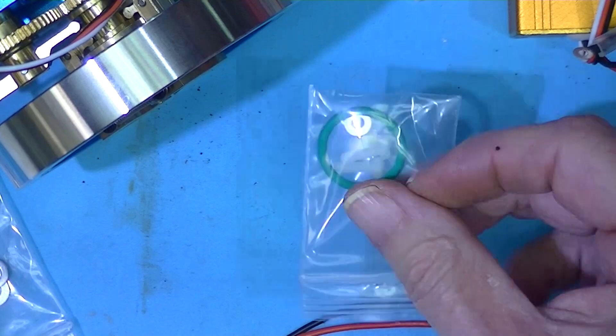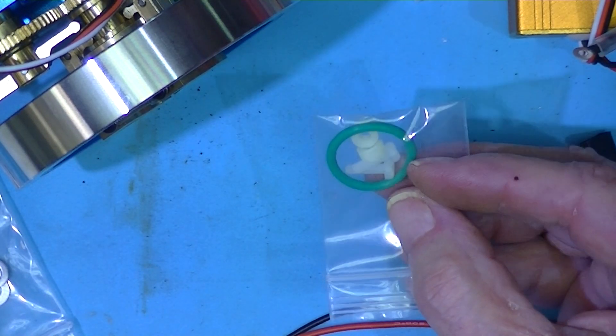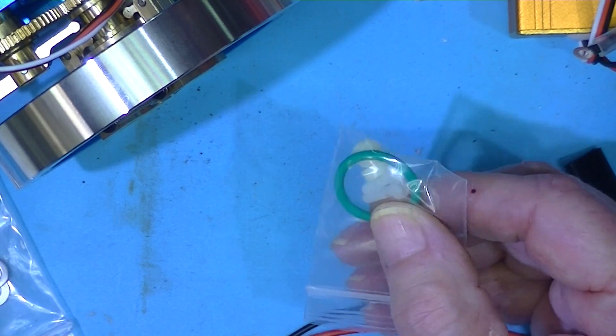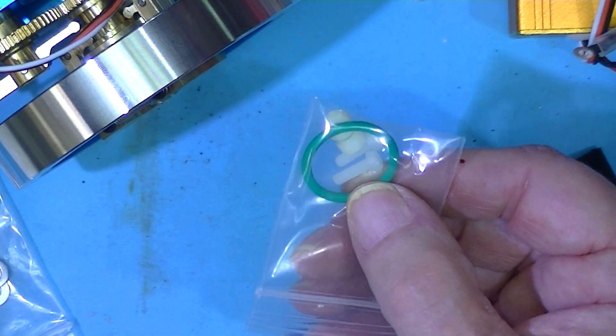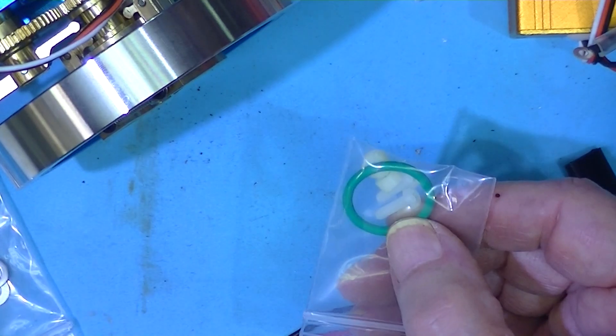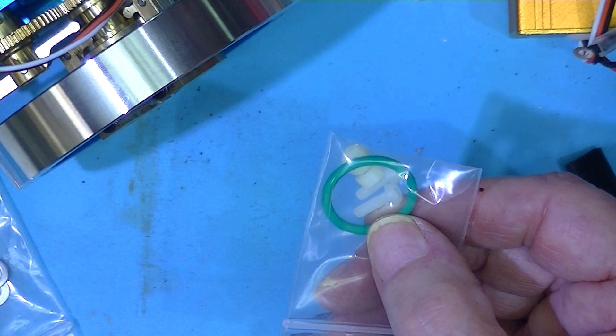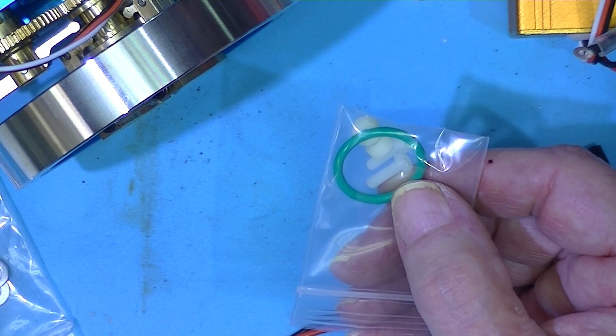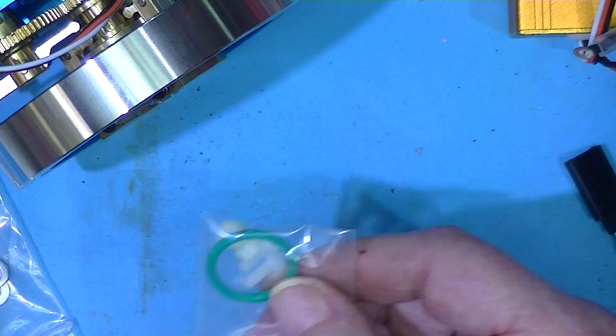In the spare parts bag is a silicon O-ring. This ring, I believe, is what is used as a piston ring in order for the piston to make compression.